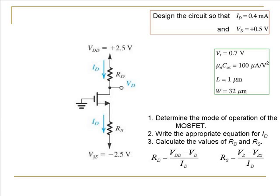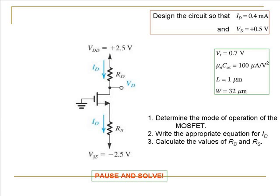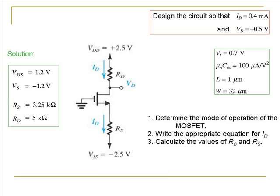It is straightforward to see that the drain resistance and the source resistance are given by the equations on the screen — you can apply a simple KVL to get these equations. Why don't you now pause, solve for the source voltage, and then solve for the drain resistance and the source resistance. The values of the parameters to be calculated are given on the left-hand side of the screen. I hope you got the right results.